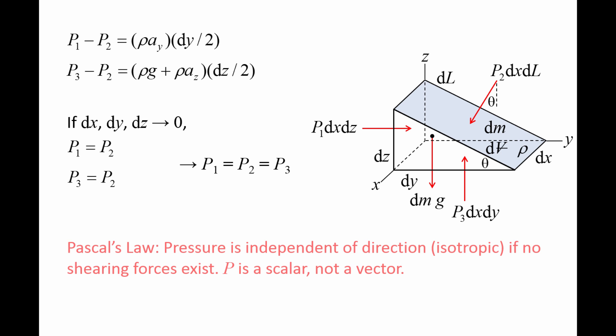In other words, pressure is isotropic, or independent of direction, if no shearing forces exist. This implies that pressure is a scalar quantity, not a vector, and we call this result Pascal's Law.